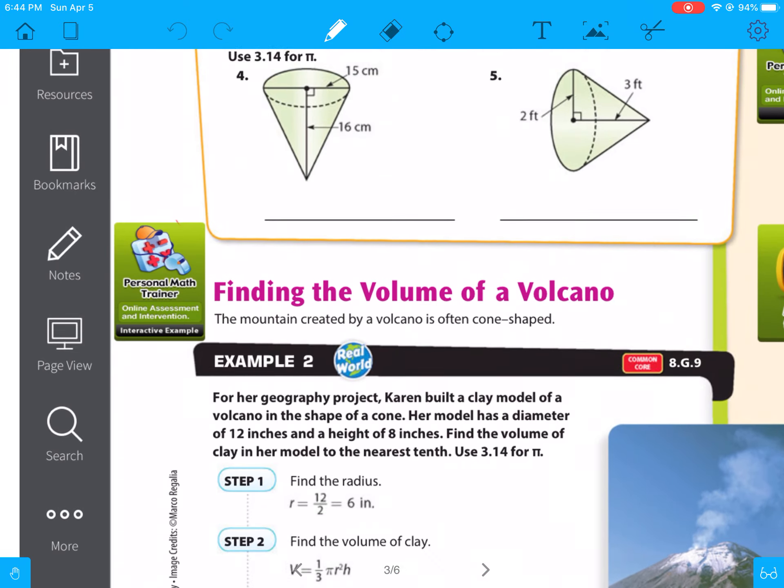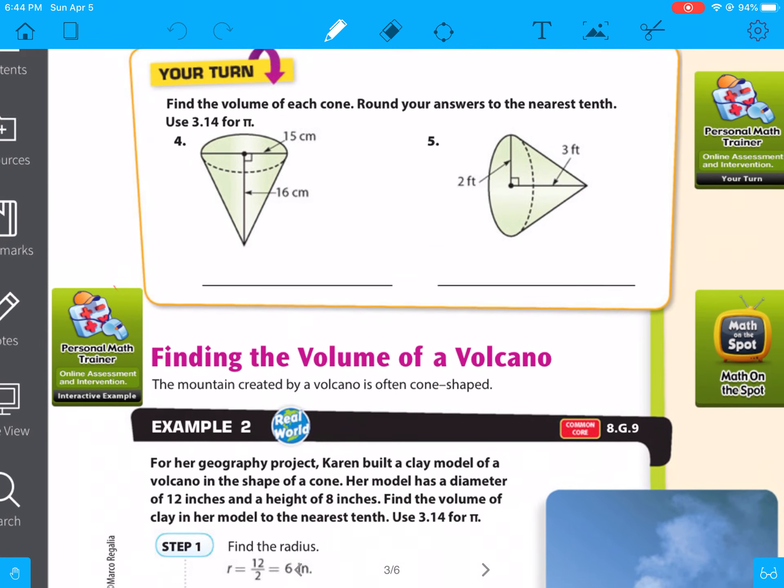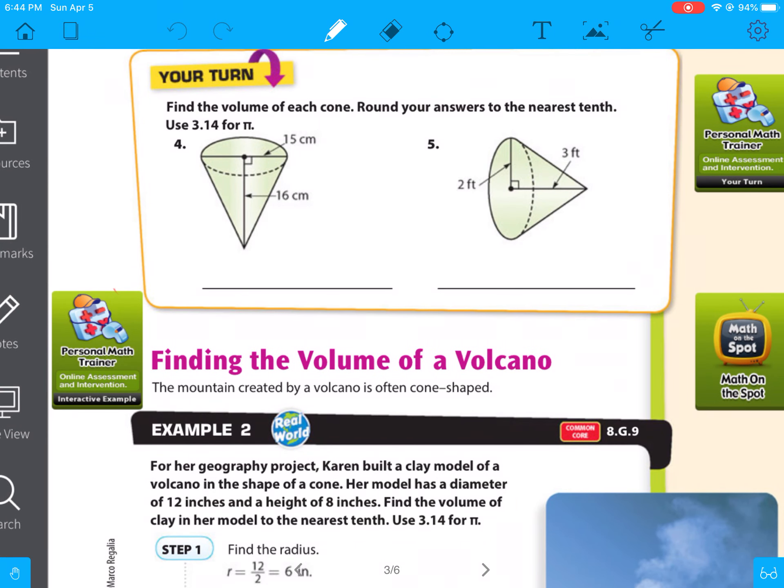So if you take a look here for number 4, they give you your diameter. You don't need your diameter. You have to find the radius, which is half of the diameter. So 15 divided by 2 is 7.5. So your radius is 7.5, and your height is 16. And that's all you actually need to know to find that.